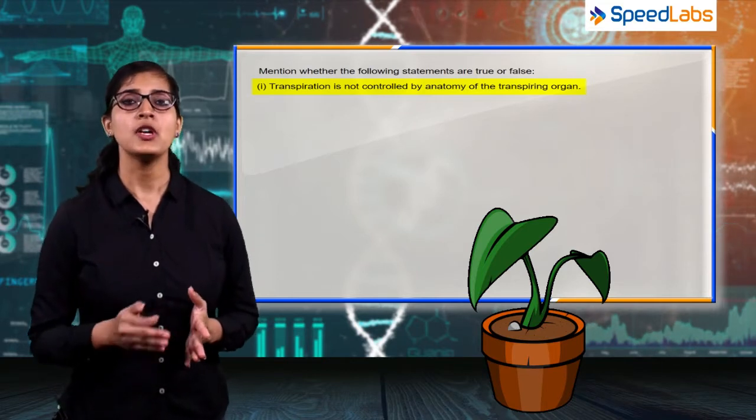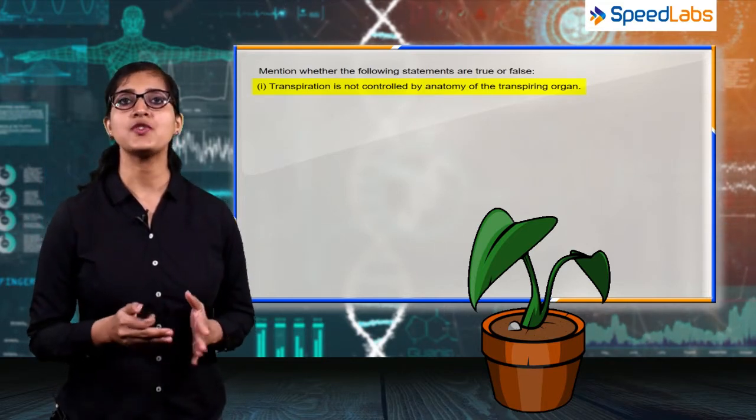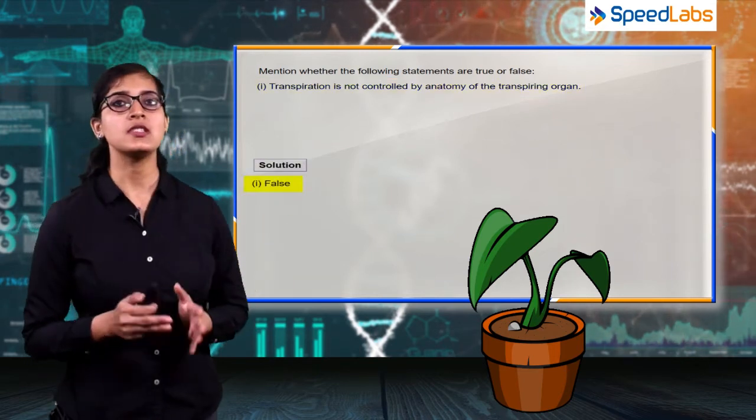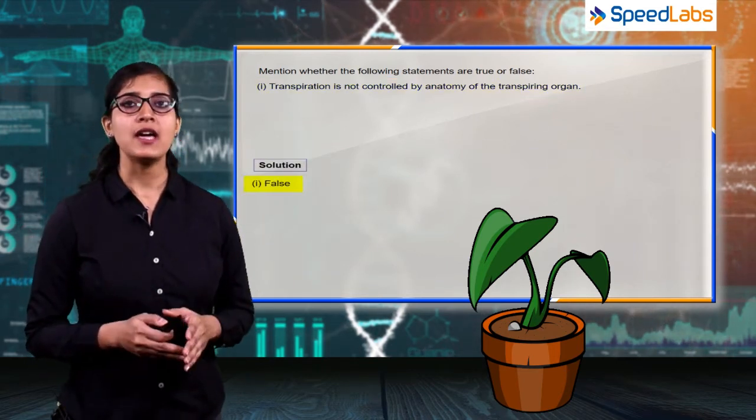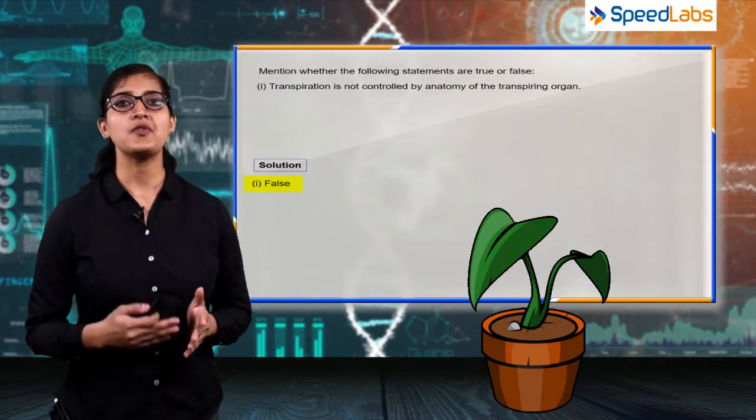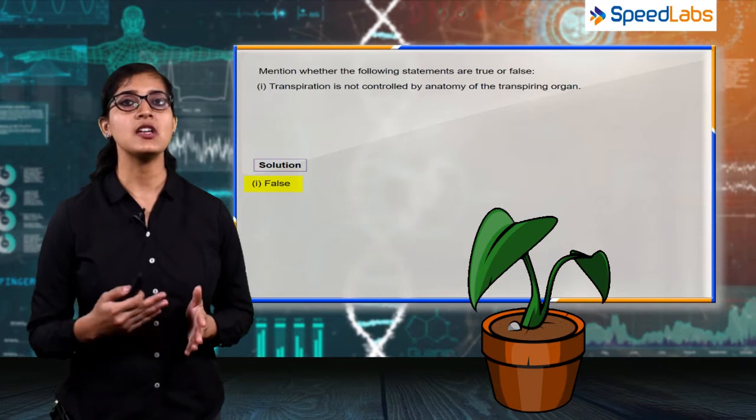So as there is direct relation, so this statement is false. The number of stomata, the thickness of cuticle, the number of lenticels on the plants will directly affect the rate of transpiration.